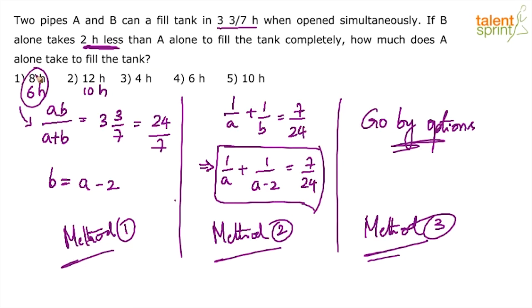So let us use option 1. What is given in option 1? 6 and 8. A takes 8 hours and B takes 6 hours. AB by A plus B: so 8 into 6 by 8 plus 6. This is 48 by 14. 48 by 14 is 24 by 7. Done. We are lucky that option 1 itself satisfies the given conditions. So we can conclude that option 1 is the answer: A takes 8 hours.